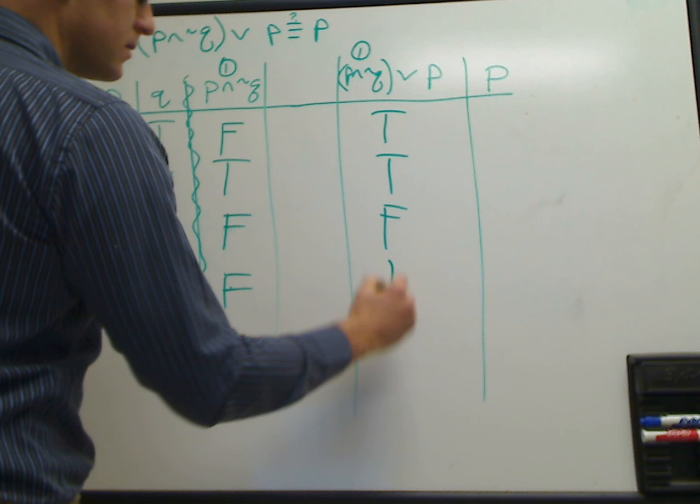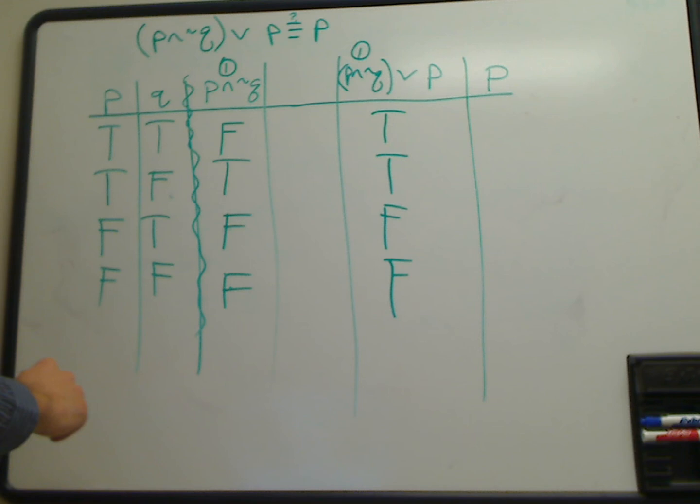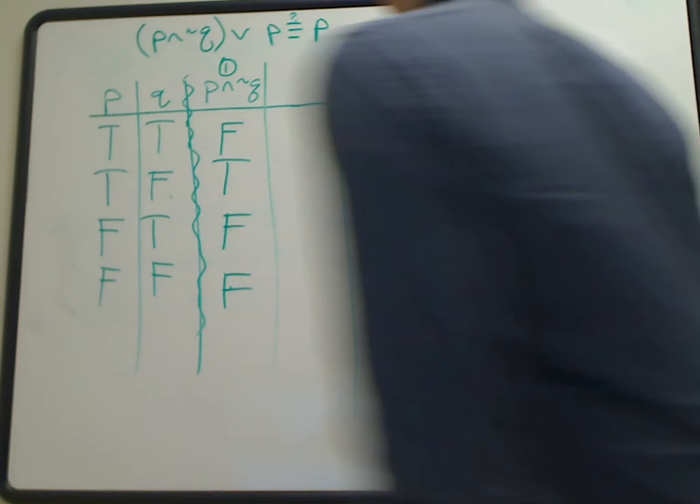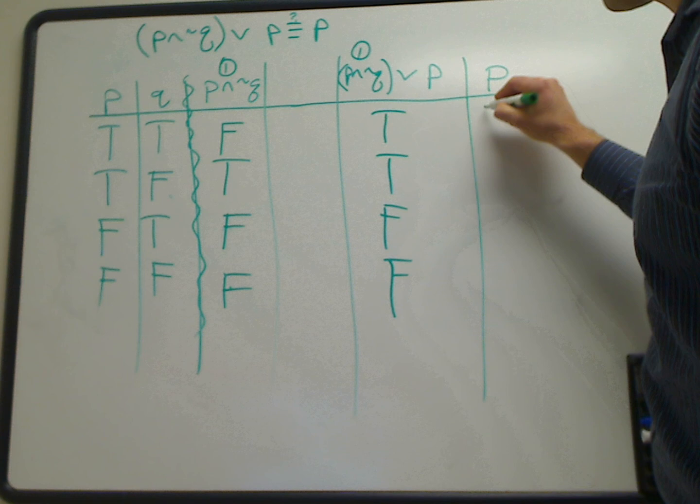Now we fill out the table for our far right column over here, which is just P. So P we can just copy directly over from that side. So it's true, true, false, false.